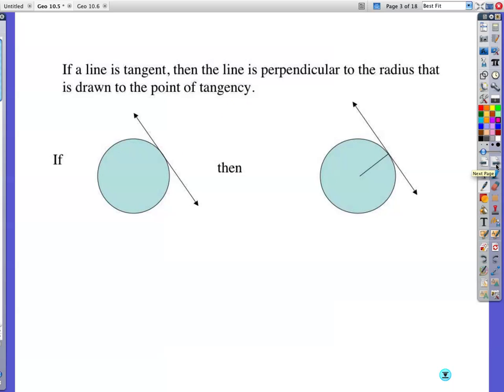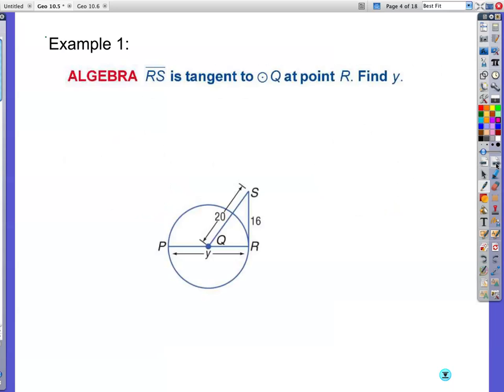Okay, well, enough with that. If a line is tangent, then the line is perpendicular to the radius that is drawn to the point of tangency. So if it's tangent, so right there I'm going to tell you that's a tangent line, then the line is perpendicular to the radius. So there's the radius that comes out and touches it at the point of tangency, then you can say this is a right angle.